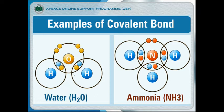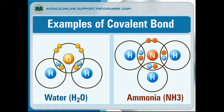Hydrogen completes its valence shell by duplet and oxygen completes its valence shell by octet. Another example is ammonia, which has one nitrogen and three hydrogen atoms. Nitrogen is from group 5A and has five electrons in the valence shell, requiring three more to complete its octet. Three hydrogen atoms each have one electron and require one more to complete their duplet. Nitrogen shares one electron with each of the three hydrogen atoms, and each hydrogen shares one electron with nitrogen, so all become stabilized and form the ammonia molecule.